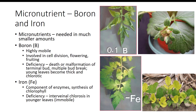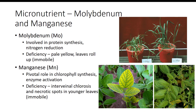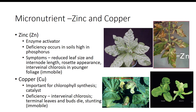Iron is a component of a wide range of enzymes and is involved in the synthesis of chlorophyll. Iron is immobile in the plant, and thus deficiency symptoms show up as interveinal chlorosis in younger leaves first. Molybdenum is involved in protein synthesis and is required for nitrogen reduction in some plants. Cereals, grasses, and vegetables exhibit deficiency symptoms in molybdenum-deficient soils. Plants deficient in molybdenum turn pale yellow and the leaves roll up. Manganese has a pivotal role in chlorophyll synthesis and is important in the activation of enzymes. Manganese deficiency is similar to iron deficiency as interveinal chlorosis is observed in the younger leaves. Zinc has a role as an enzyme activator. Deficiency symptoms typically occur in soils that are high in phosphorus. Typical symptoms of zinc deficiency are reduced leaf size and internode length, resulting in a rosette appearance, and interveinal chlorosis may occur in younger foliage.